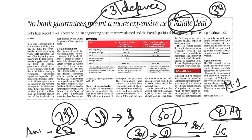The opposition demanded the government make deal records public. Former French President Hollande said the French government had no option in choosing the Indian offset partner. The defense minister refused to share classified information. Petitioners then approached the Supreme Court, alleging the decision-making in the Rafale deal was flawed, the price differed from the original deal, and the government was biased in choosing the offset partner.